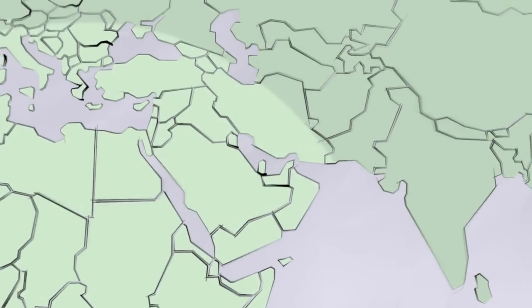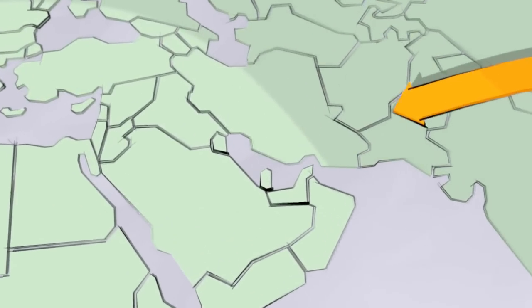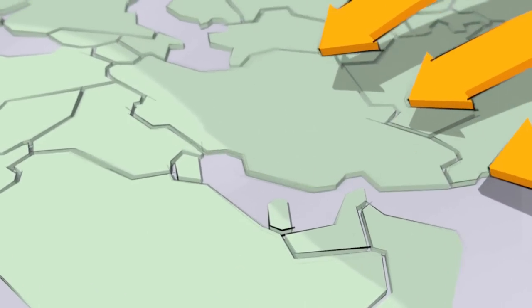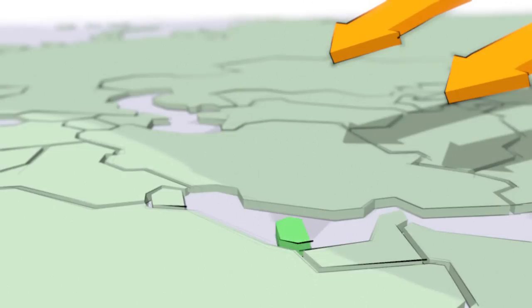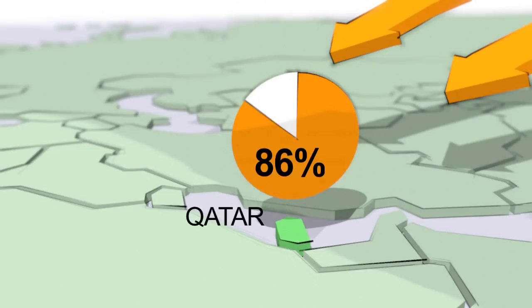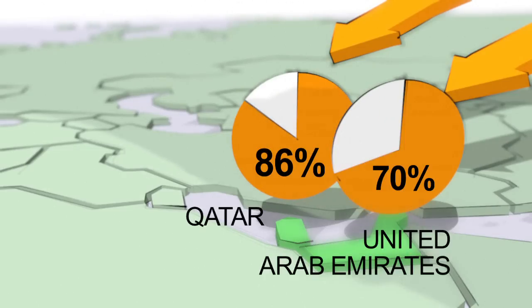The petroleum Gulf countries have become a new center for immigration, where migrants from different parts of Asia have come to constitute majority populations in places like Qatar, 86% of the population, UAE, 70% of the population, and Kuwait, 69%.